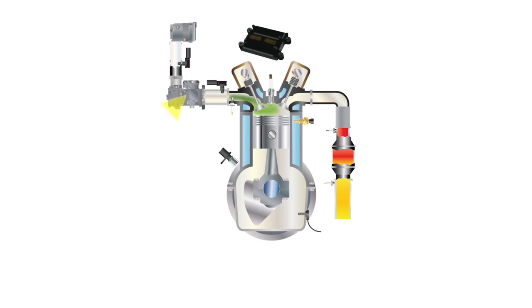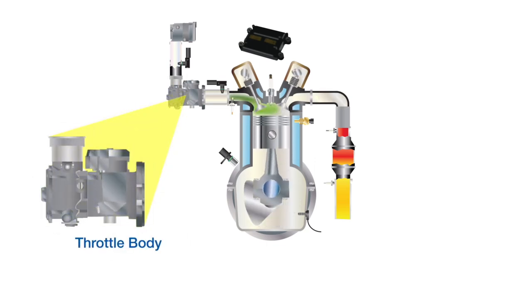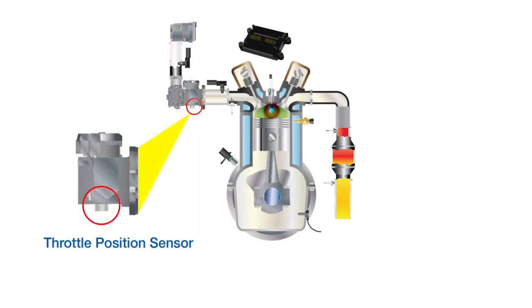The ECU sends signals to the engine throttle body to change the fuel mixture to the engine. The engine throttle position sensor tracks the shaft movement and position, closed throttle, wide open throttle, or any position in between, and transmits an electrical signal to the ECU to make any required adjustments.